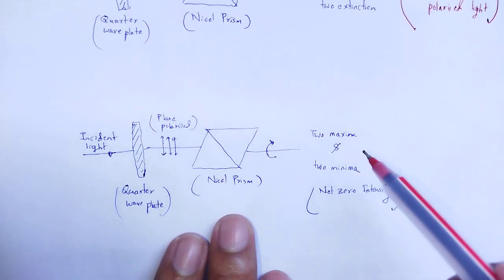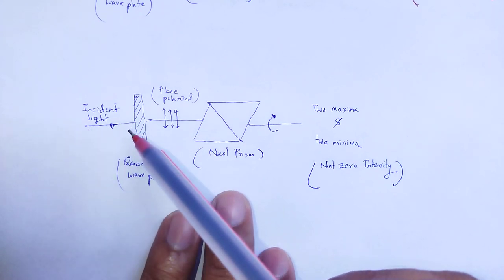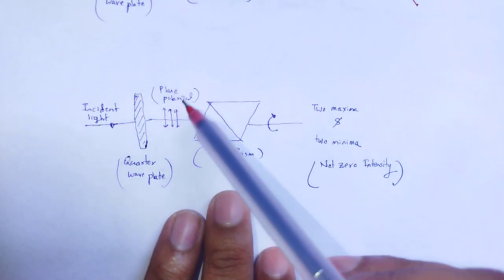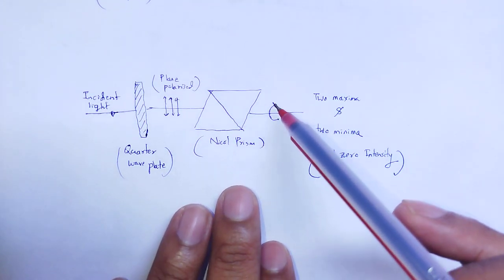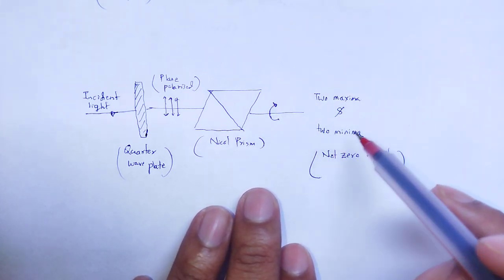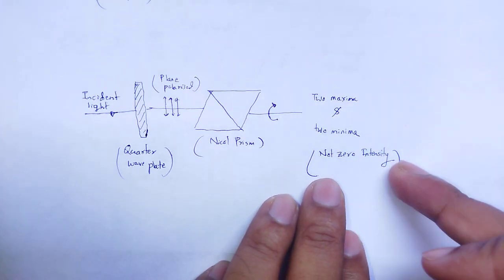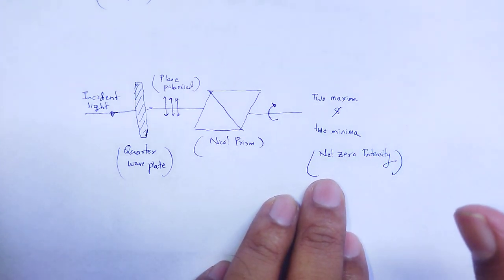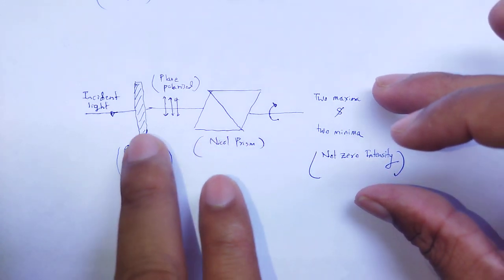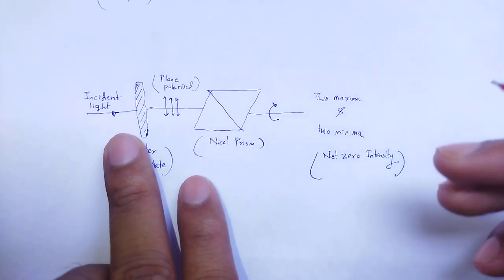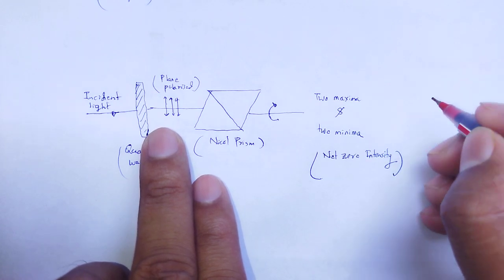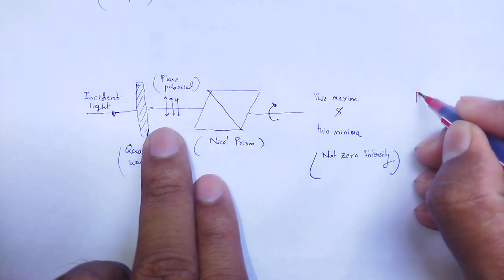Next, if we observe incident light through the quarter wave plate giving plane polarized light, incident through the Nicol prism under full rotation, and we see two maxima and two minima — but the minimum intensity is not equal to zero — then the nature of that incident light is said to be partially plane polarized light.